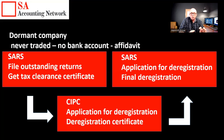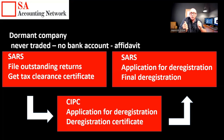Once you have your tax clearance certificate, you as the director of the company — or member of the CC or whatever format it is — need to send CIPC a letter stating that you want to apply for the deregistration of the company. That process unfortunately takes a while — normally about six months later, on average, you will receive an email back from CIPC with a deregistration certificate, which is proof that the company was deregistered at CIPC. Once you have the deregistration certificate in hand, you need to go back to the receiver of revenue — normally an in-person, telephonic, or video appointment — to apply for the final deregistration. Then your responsibilities regarding that company are done.